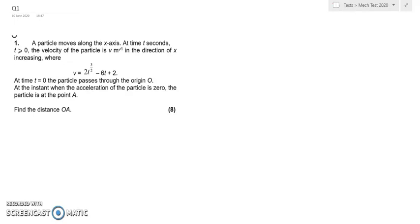At t equals 0, the particle passes through the origin. At the instant when the acceleration of the particle is 0, the particle is at point A. Find the distance OA.